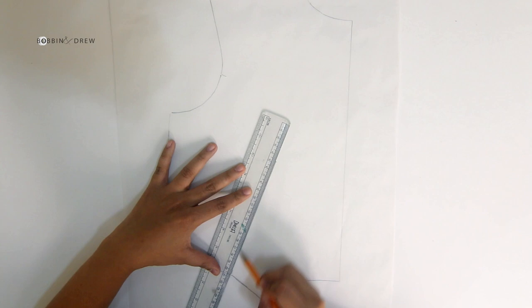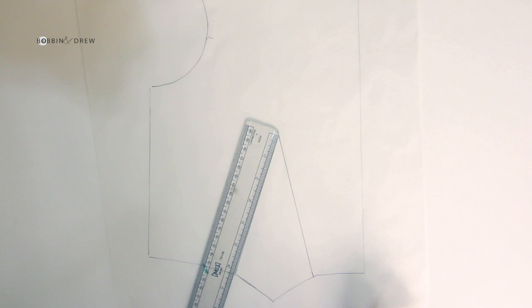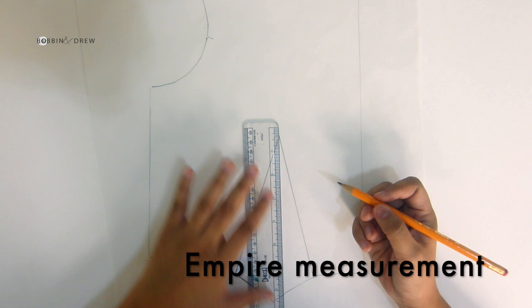Draw the dart legs to the bust point. From the bust point, mark the measurement on both dart legs. Here I'm using three inches.